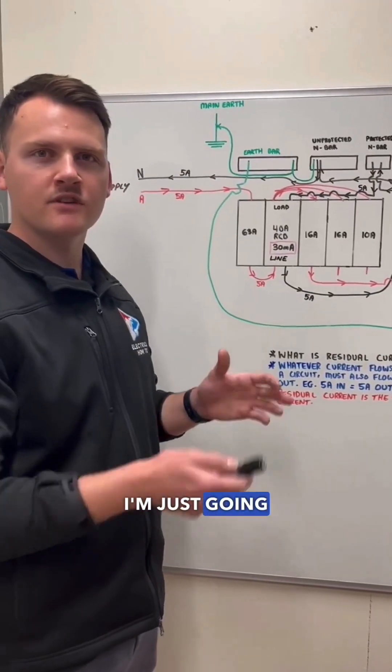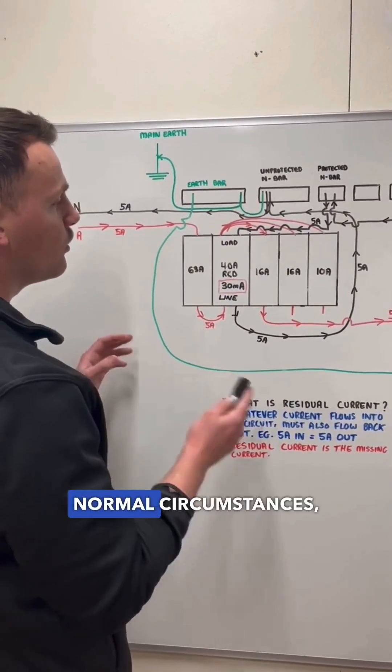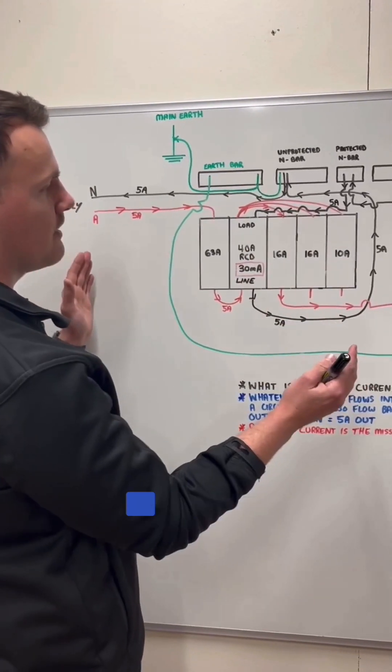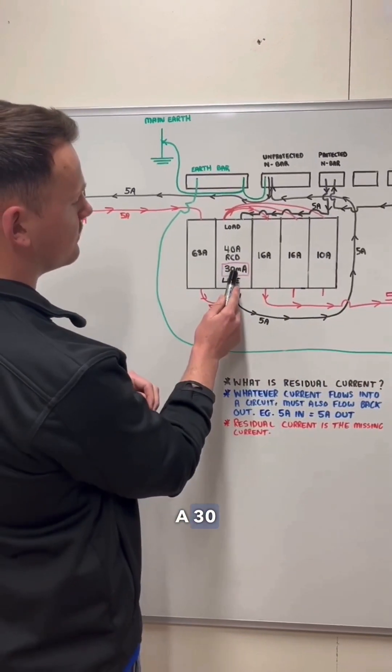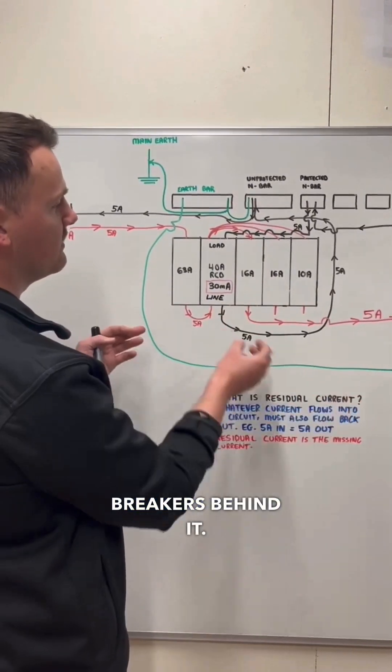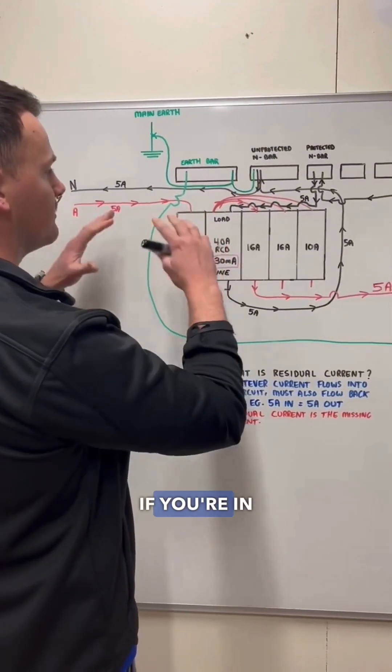First things first, I'm just going to run you through how an RCD or a safety switch, whatever you want to call it, operates under normal circumstances, not under fault conditions. This diagram here I've drawn up as if we're in a house, so we are using a 30 milliamp RCD and I've set it up with three circuit breakers behind it. This could be an RCBO, it wouldn't really make a difference.